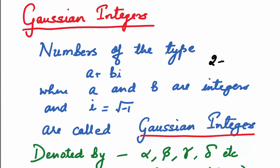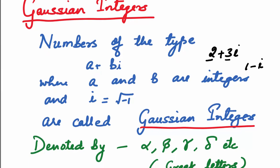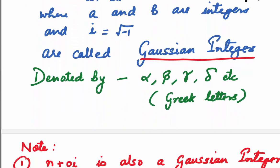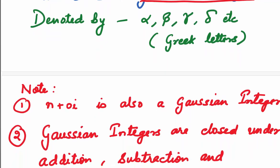For example, 2 plus 3i is a Gaussian integer — 2 and 3 are both integers. 1 minus i is also a Gaussian integer. Gaussian integers are denoted by the Greek letters alpha, beta, gamma, delta, etc.